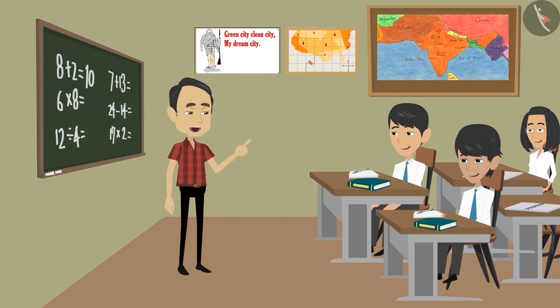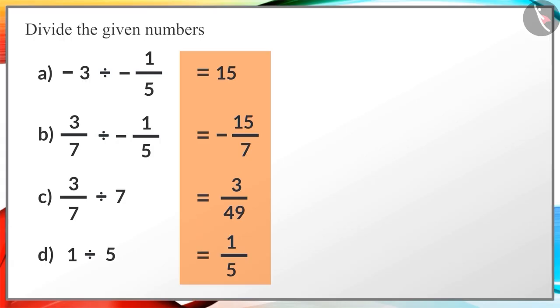Children, what did you learn about the closure property through these examples? Sir, whenever we divide 2 rational numbers, we always get a rational number as the answer. That is why we can say that rational numbers are closed under division.